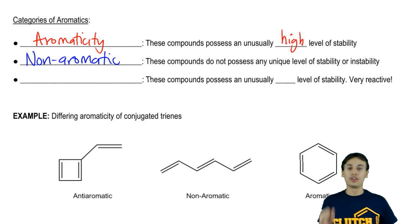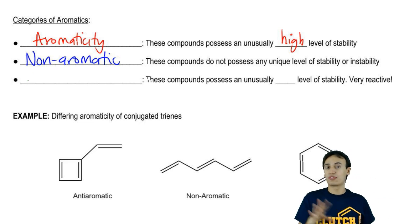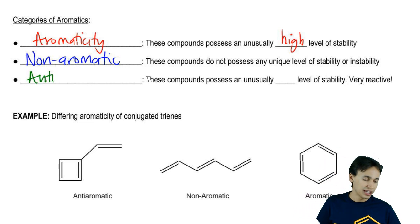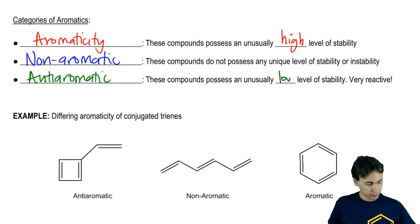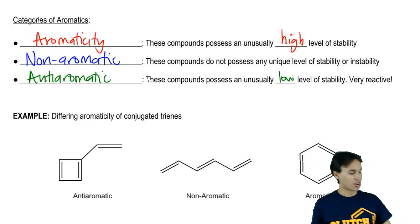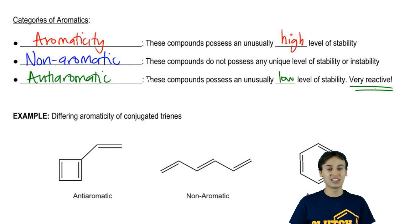But then we've got this third category that you've definitely never interacted with before and that's called antiaromatic. Now you might not understand why something is antiaromatic, but for right now I want you to know that it's going to be a compound that displays an unusually low level of stability. So these molecules are actually very reactive. In fact, they're almost impossible to make. Scientists spend years making these antiaromatic molecules because they're so reactive that they're unstable and they decompose on their own. So we're talking about crazy level of instability here.